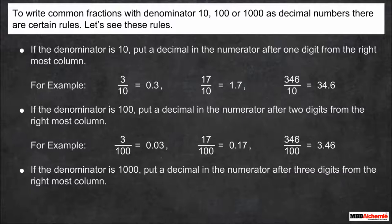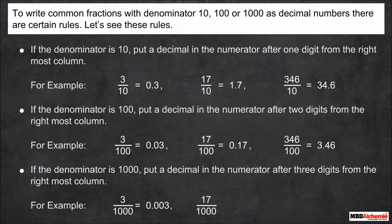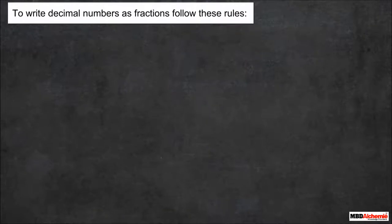If the denominator is 1000, put a decimal in the numerator after three digits from the rightmost column. For example, 3/1000 = 0.003, 17/1000 = 0.017, and 346/1000 = 0.346.